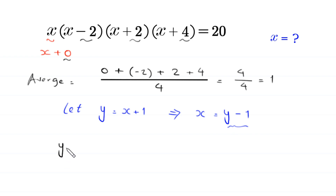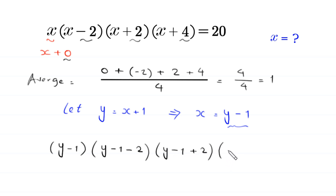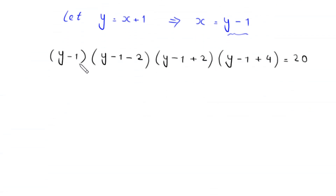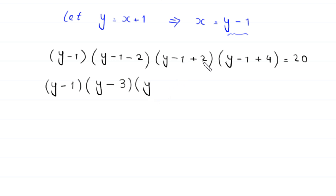The equation becomes (y minus 1) times (y minus 1 minus 2) times (y minus 1 plus 2) times (y minus 1 plus 4) equals 20. Simplifying the brackets: (y minus 1) times (y minus 3) times (y plus 1) times (y plus 3) equals 20.